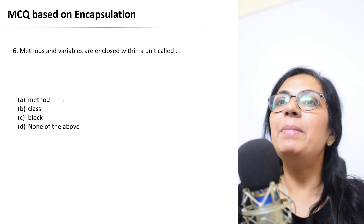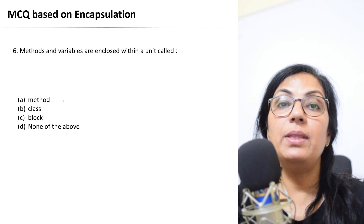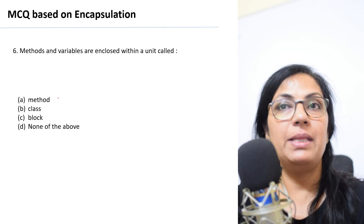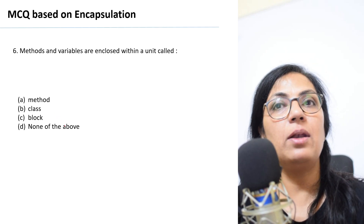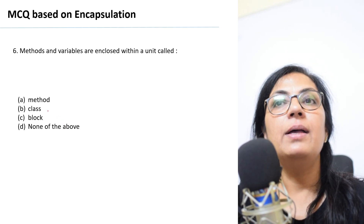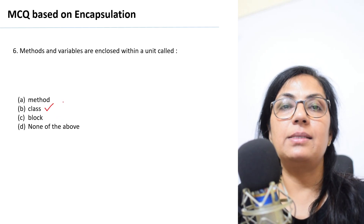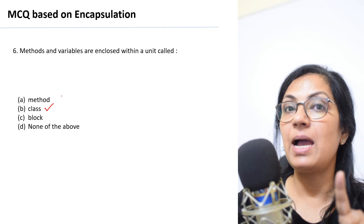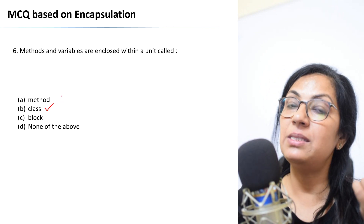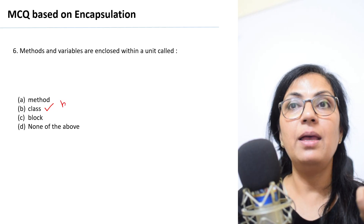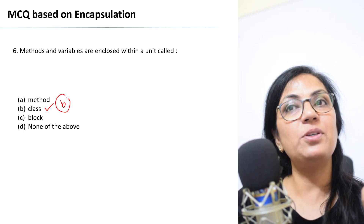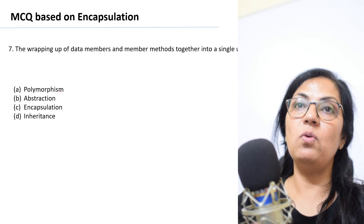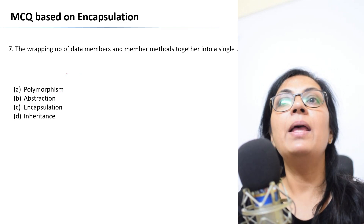Question number six: Methods and variables are enclosed within a unit — what is the name of that unit? Method, class, block, or none of the above? The answer is class. A class is a collection of methods and data members, and these data members are the variables. So option B is the correct answer.